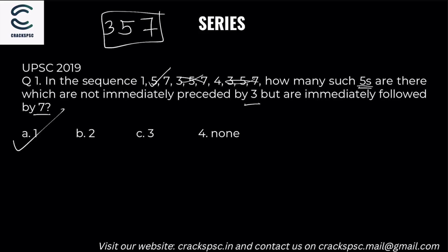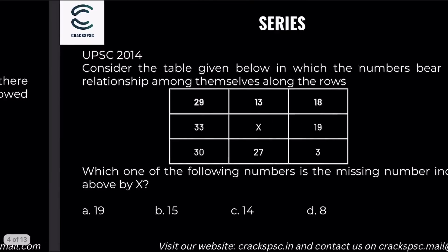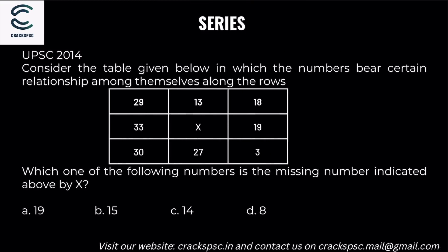Moving on to UPSC 2014 — this is a matrix type question. It's a three-by-three order matrix. Consider the matrix given below in which numbers bear certain relationships among themselves along the rows. You need to find the pattern along the rows. Which of the following numbers is missing, indicated by X? You can pause the video and try this first.